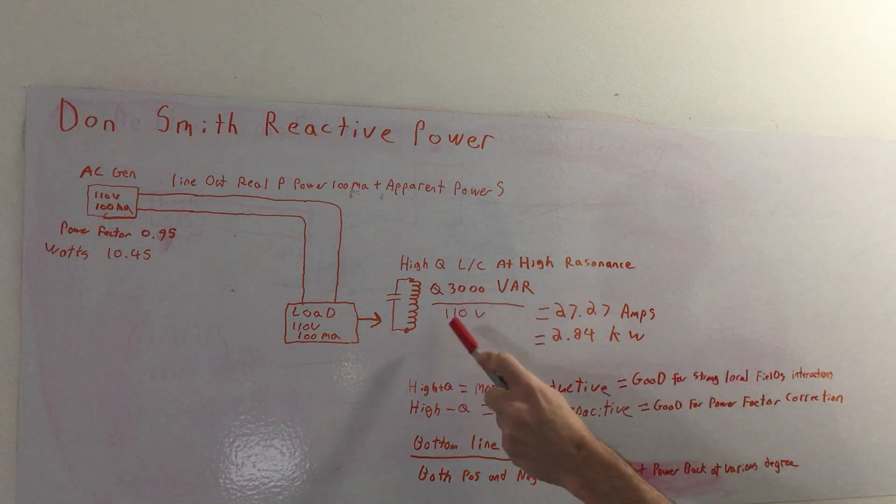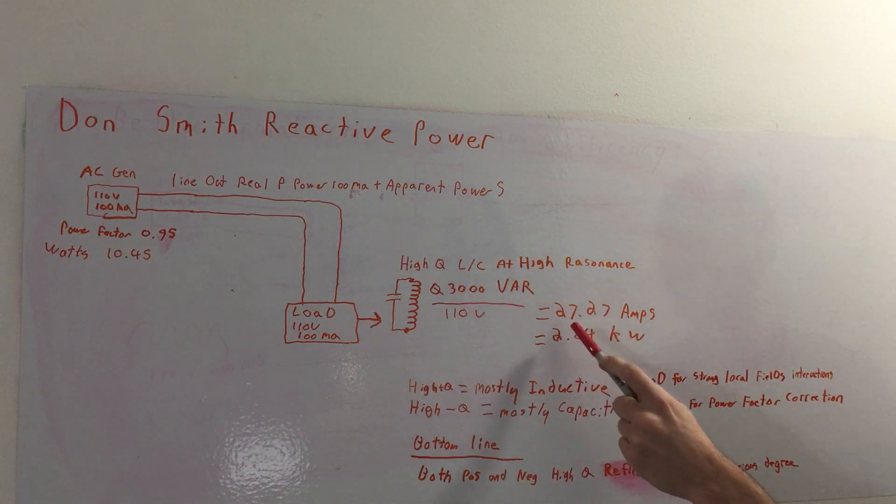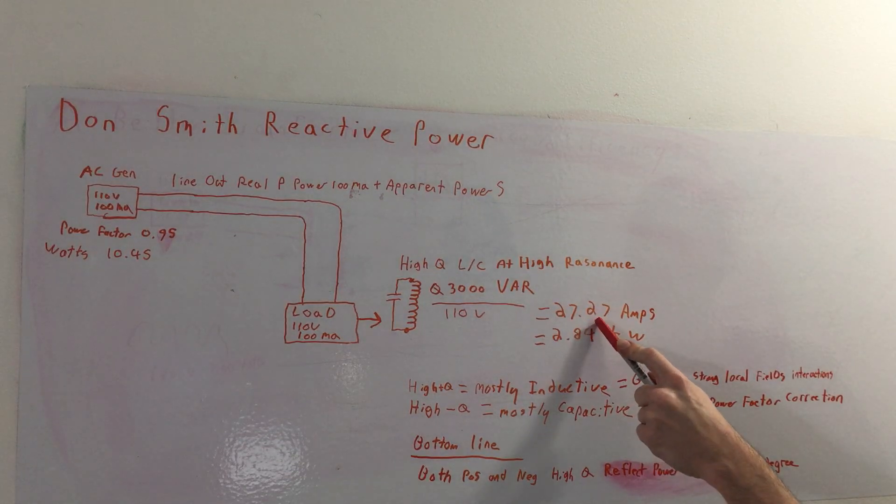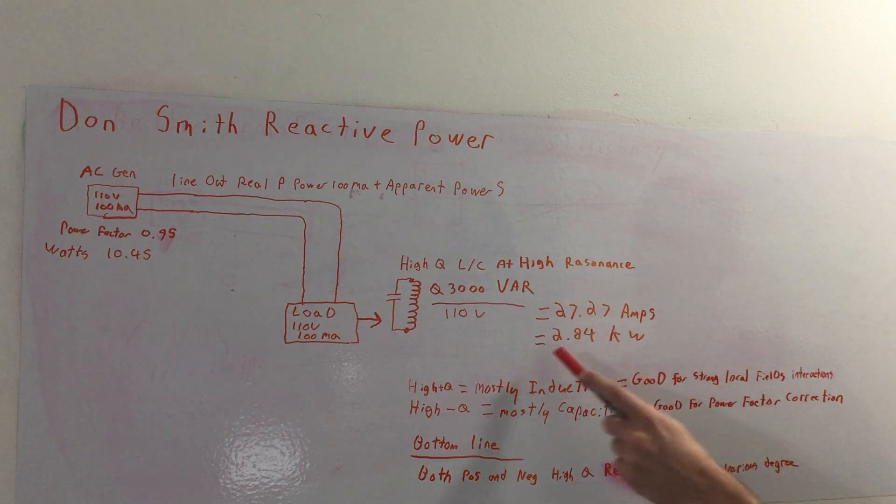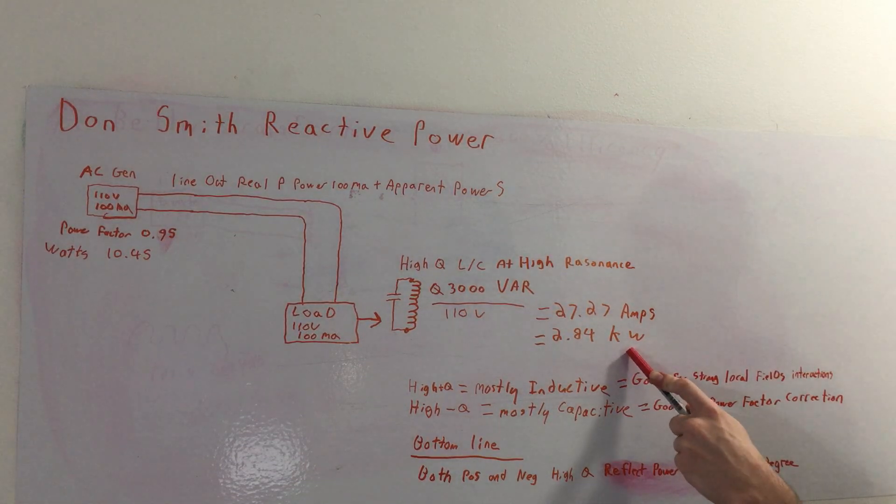So basically to get our amps we divide that by our voltage. So this is 27.27 amps or the equivalent of 2.84 kilowatts. So you're going wow, that's a lot of reactive power. That's why a lot of people want to tap into it folks.